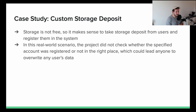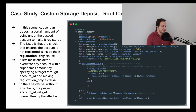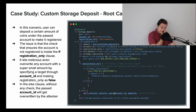In this real-world scenario, the project did not check whether the specified account was registered in the right place — they did check it, but not in the right place. This led to anyone being able to overwrite any user's data. In this example, we have a storage_deposit function that lets users deposit some NEAR for storage. There's an account_id, a registration_only flag, and an attached deposit.